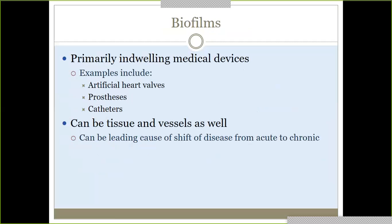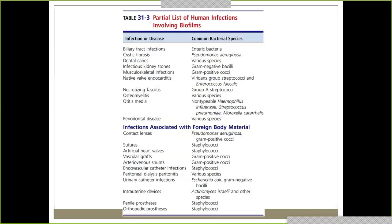Big examples include indwelling medical devices: artificial heart valves, prostheses, and catheters. You can also see biofilm within tissues and vessels, like on a vessel wall lining itself. There's a listing of human infections that involve biofilms and different organisms commonly involved within those biofilms.